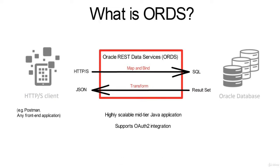ORDS is a highly scalable Java application, and it supports OAuth2 integration as well, which handles security using the token concept — we'll see that in detail further on. This is the basic overview of ORDS, which explains the big picture of how it works: the HTTPS client sends a request, ORDS converts it to SQL, binds it, and returns the results in the form of JSON.